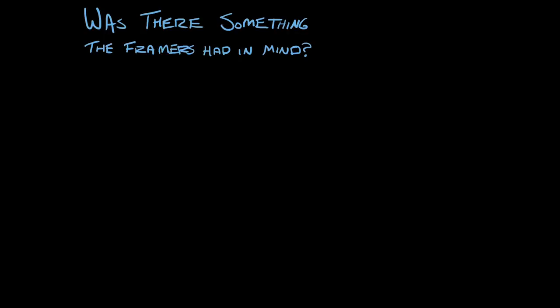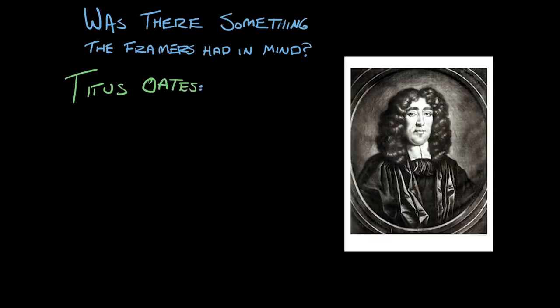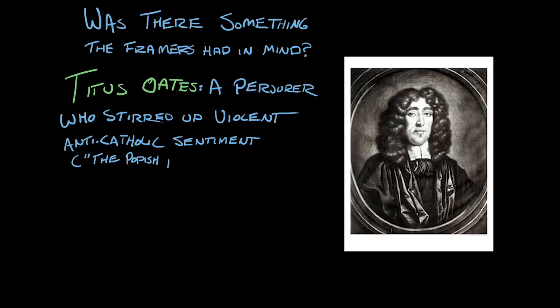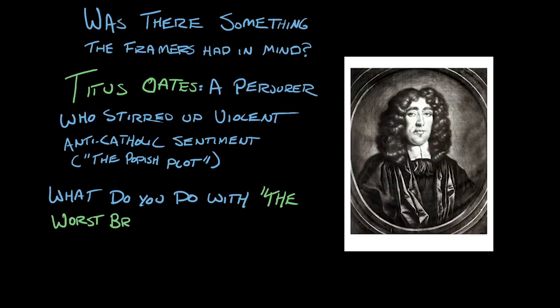Well, there were some historical evils. The English Bill of Rights went into place in 1689, and around that time there was a controversy in England around a person by the name of Titus Oates. Titus Oates was somebody who had made a false accusation, had committed perjury, which resulted in the execution of 15 Catholics. The plot he had alleged was one to assassinate the king of England. In fact, in 2005, English historians voted him the worst Briton of the 17th century and the third worst Briton of the last thousand years.